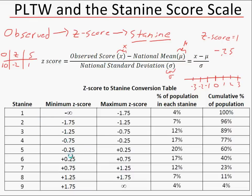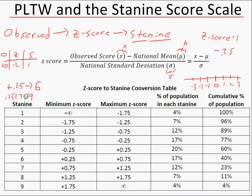If a student has a positive 0.25 z-score, you follow it down until you find positive 0.25 — that would be a stanine of 6. You may wonder whether 0.25 is a 5 or a 6. In practice, it won't be exactly 0.25; you'll have a z-score like 0.251759. Don't round when making your calculations. Since 0.251 is greater than 0.25, the student would get a stanine of 6. You would do that for each of your students.